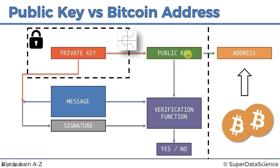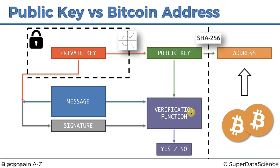The reason for this additional protection — using the SHA-256 function to derive the address — is that if at some point the elliptic function is somehow reverse engineered, or a flaw is uncovered, and somebody finds a way to go from public key to private key, then if you've been giving everybody your public key for all your transactions, someone could quickly get to your private key. But if you're protecting it with an additional layer — the SHA-256 hashing — then even if that happens, people will only have your address and won't be able to reach the public key quickly.